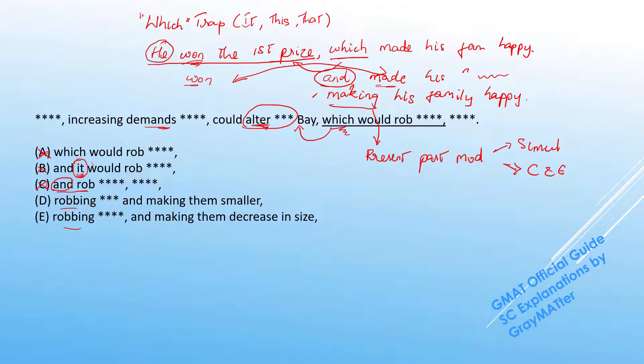Both D and E can work in that way that we have an ING modifier which is modifying the clause in front of it. Let us look for another difference here and one obvious thing that will strike is smaller and decrease in size. We can argue that smaller is a much more straightforward way of saying decrease in size, but let us not take the leap of faith in this manner.